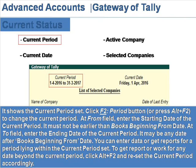It may be any date after the books beginning from date. You can enter data or get reports for a period lying within the current period set. To get a report or work for any date beyond the current period, click F2 plus Reset and reset the current period accordingly.